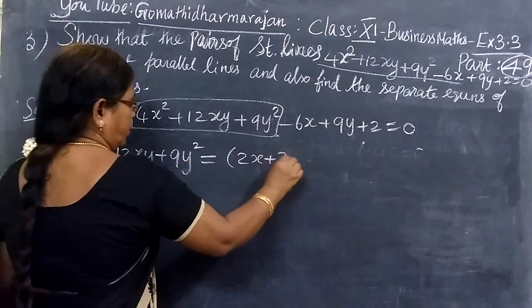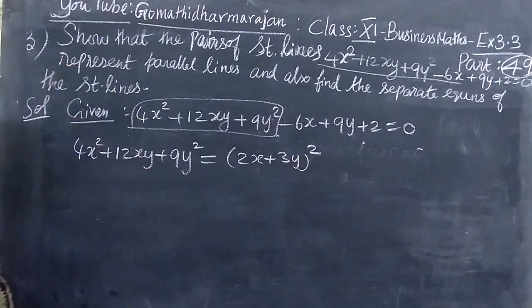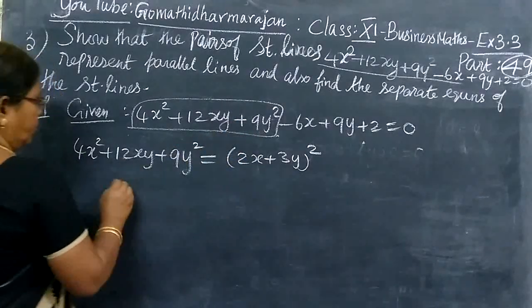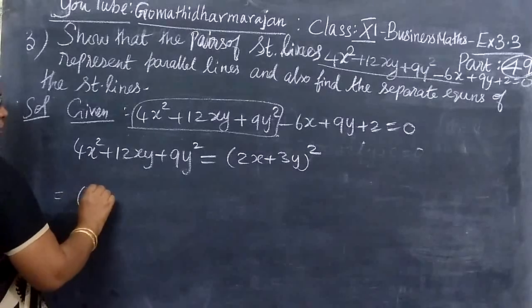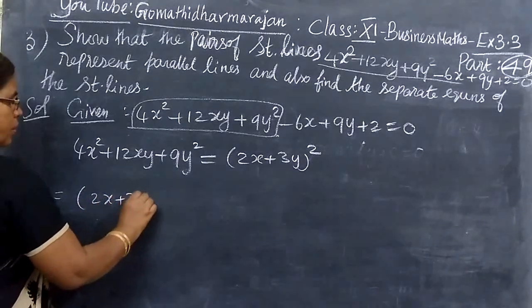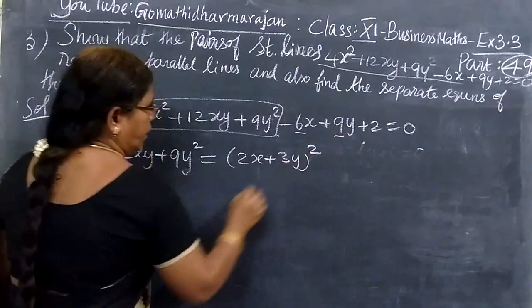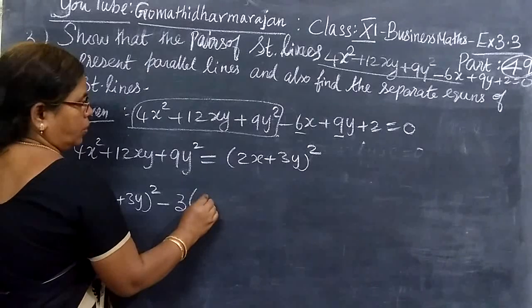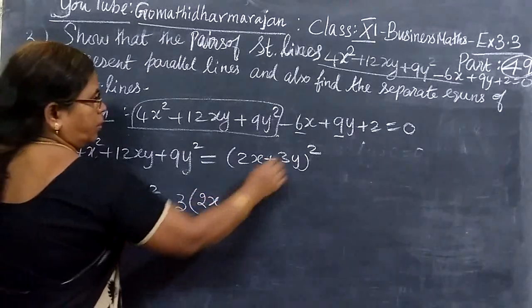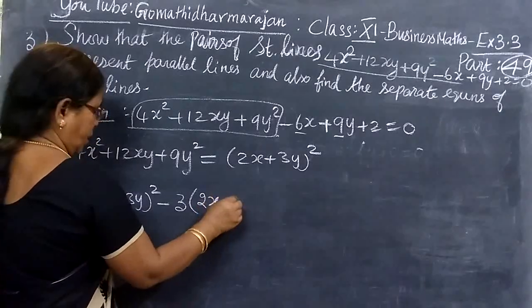If we have (2x + 3y)², you can write this as (2x + 3y)² minus some terms. This is the difference of squares form.